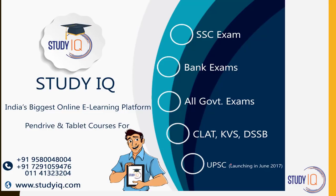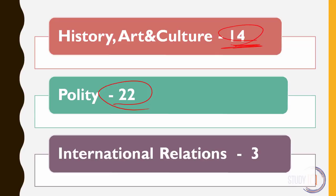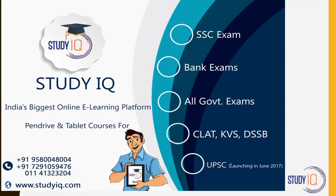StudyIQ has launched its pendrive and tablet courses for UPSC IES examination. Those of you preparing for 2018 who want to prepare from home and do not want to go to metro cities can avail our pendrive, tablet, or android courses. If you order today, that is 20th of June, you will get a flat discount of 5000 using code UPSC5A. But this offer is only for today, 20th June.